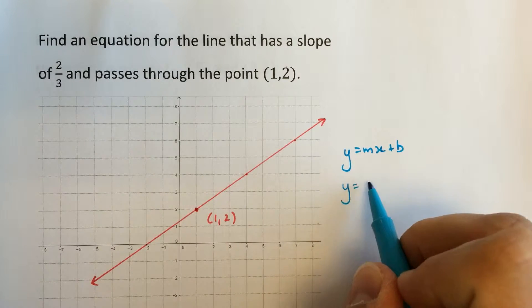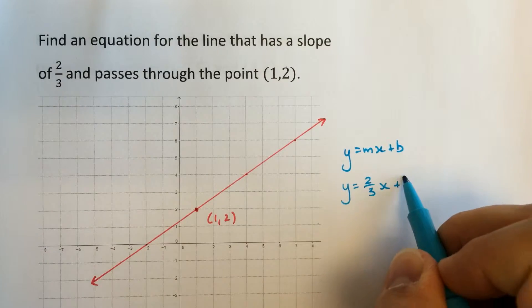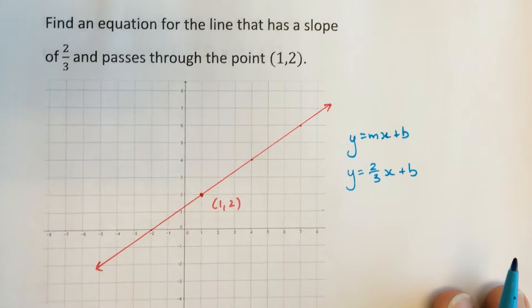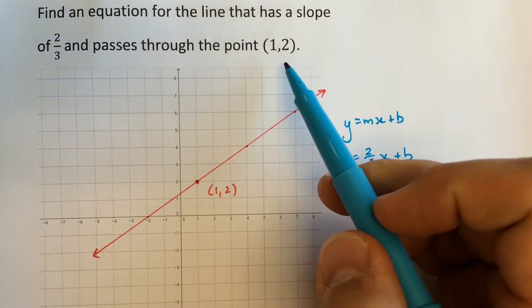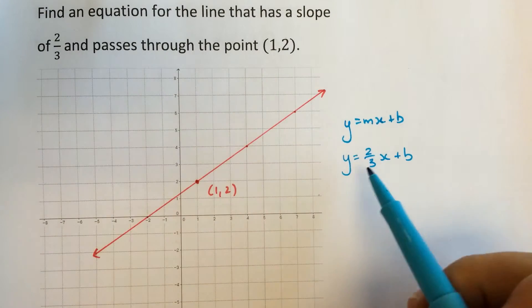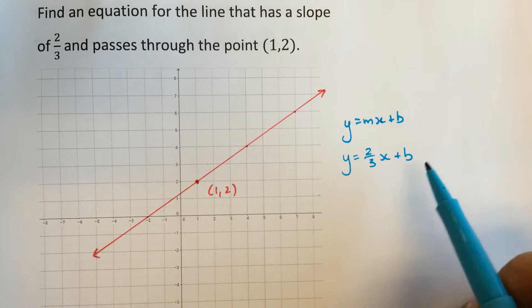And we know for this equation that the slope is two-thirds. We just don't know what b is. So we're going to use this point that we do know that's on the line. Substitute it in for x and y and solve for b.